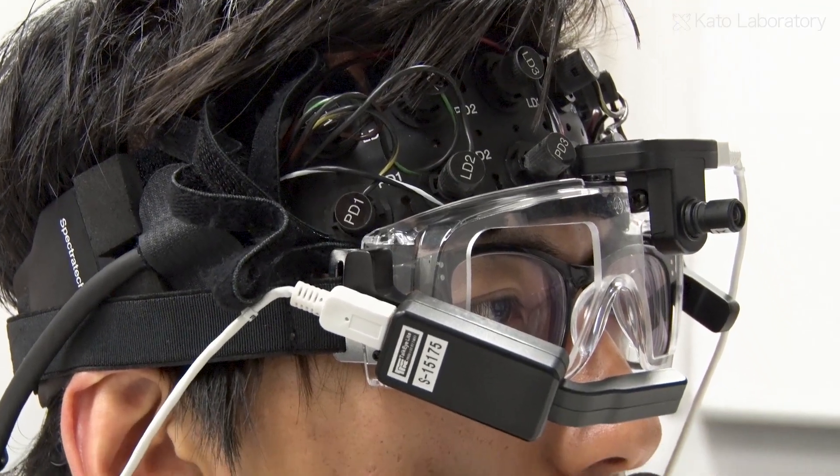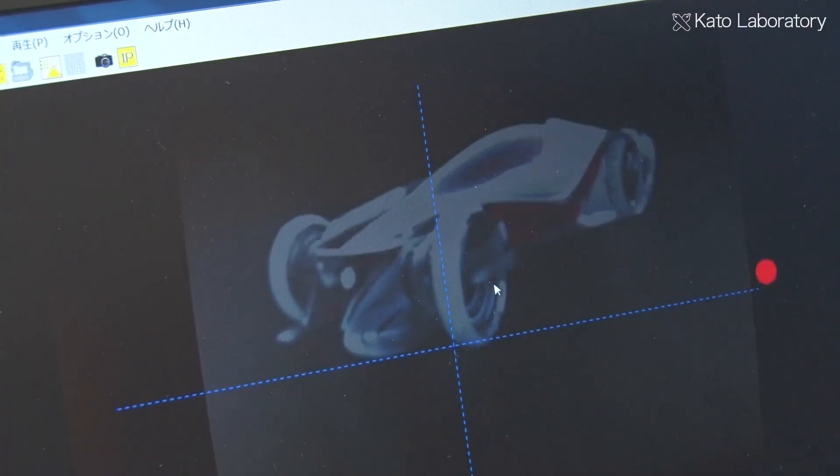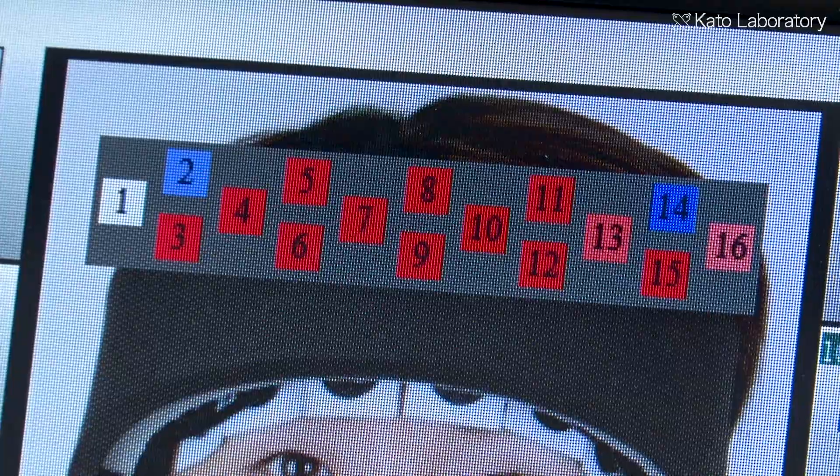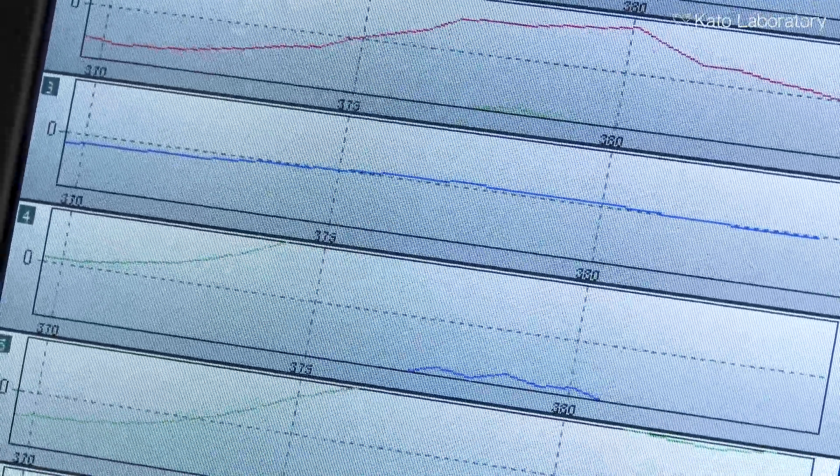In addition, the CATO laboratory uses Near Infrared Spectroscopy NIRS equipment to measure cerebral blood flow changes, as it aims to quantitatively evaluate impressions felt by people when they see a design.